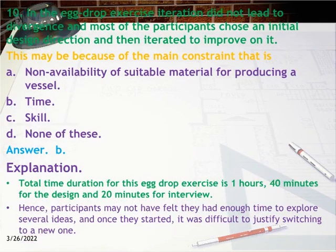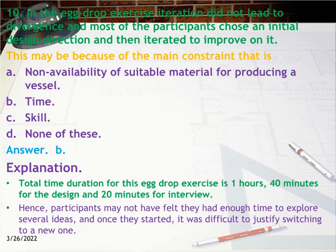Question 10: In the egg drop exercise, iteration did not lead to divergence and most participants chose an initial design direction and then iterated to improve on it. This may be because of the main constraint that is: a) non-availability of suitable material, b) time, c) skill, d) none of these. Answer: B. Explanation: The total time duration for the egg drop exercise is one hour — 40 minutes for design and 20 minutes for interview. Hence participants may not have felt they had enough time to explore several ideas, and once they started it was difficult to justify switching to a new one.